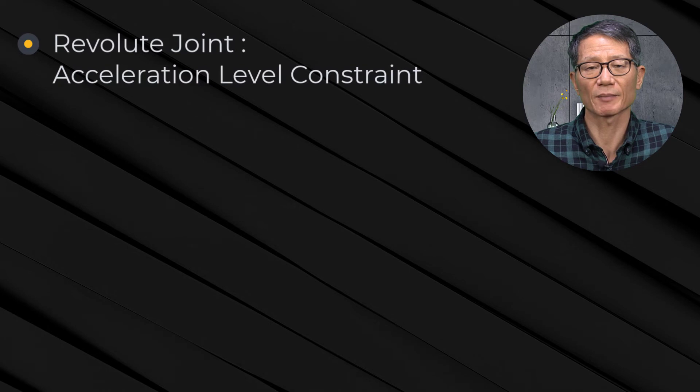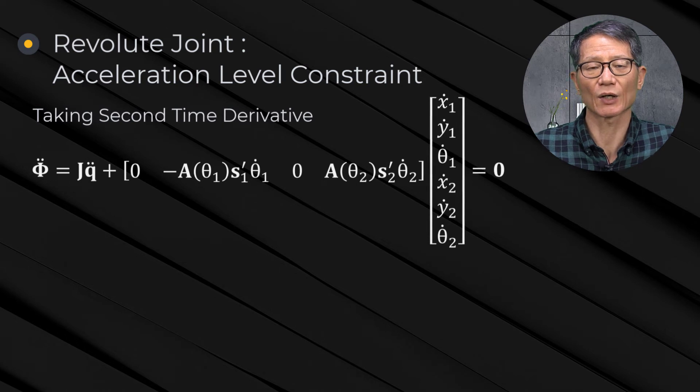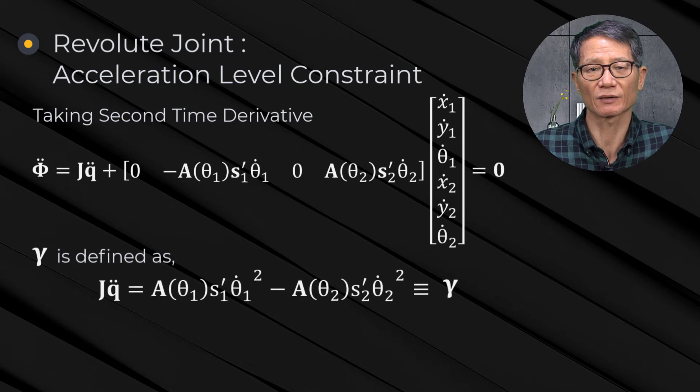Acceleration Level Constraint. Taking the second time derivative of the constraints is the following acceleration level constraints. Gamma in this equation is a term containing velocities.